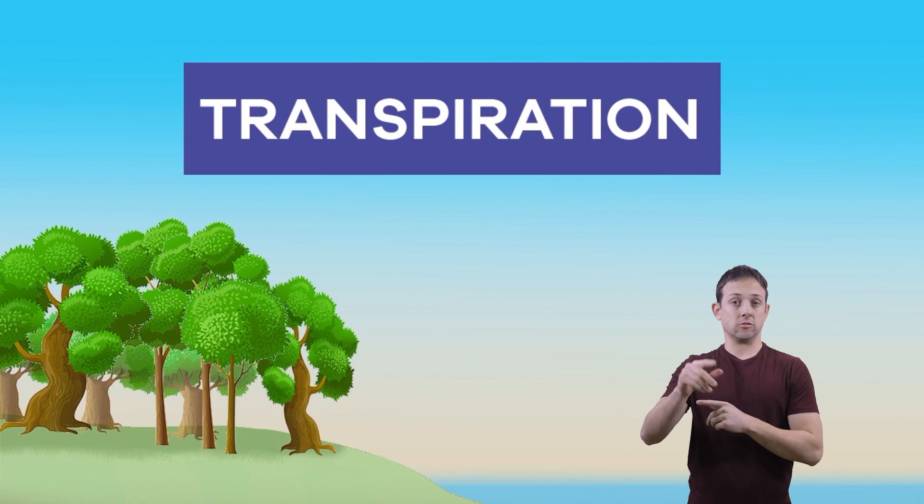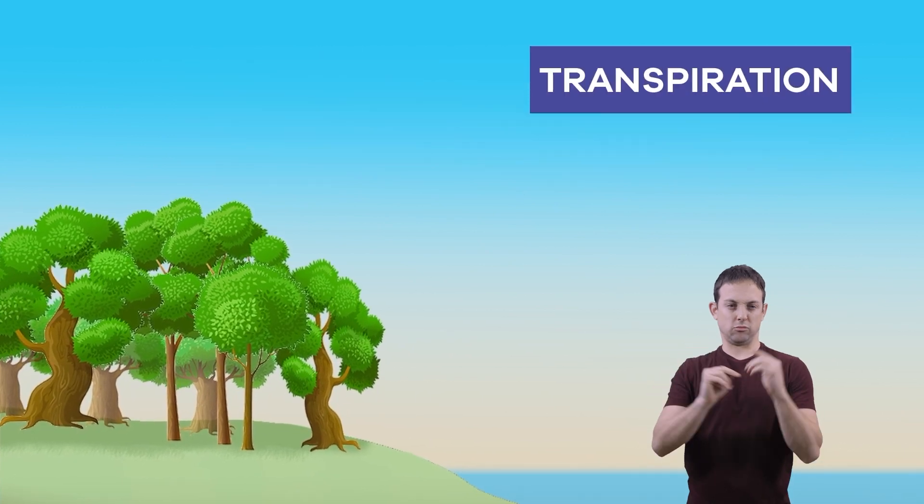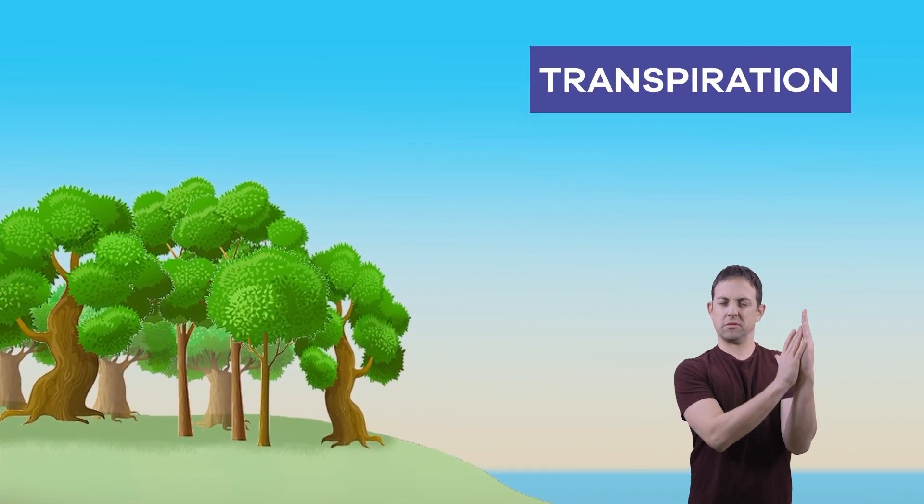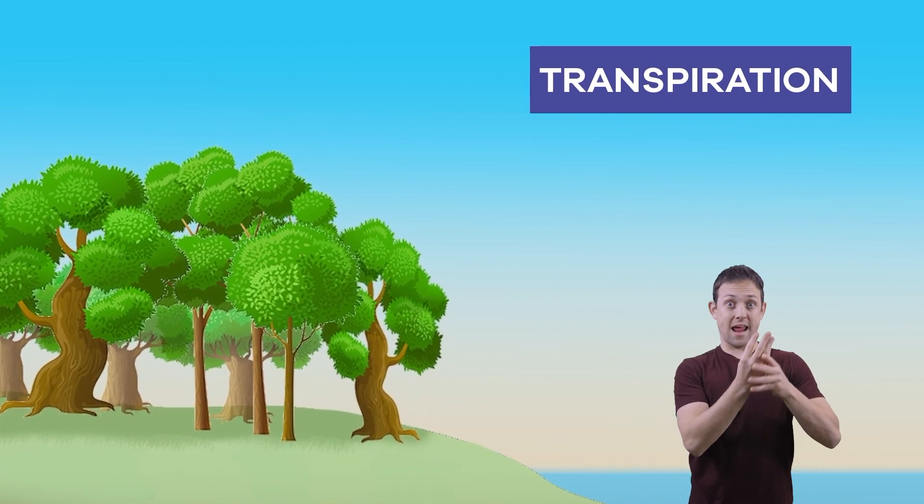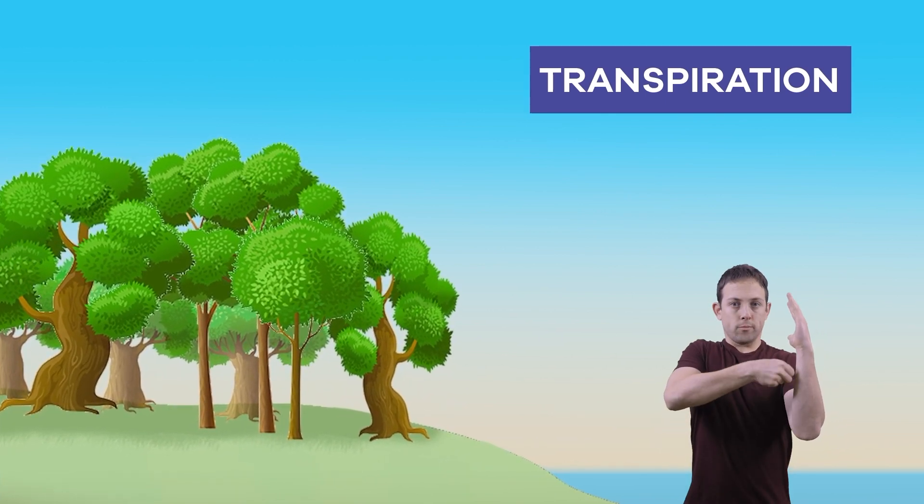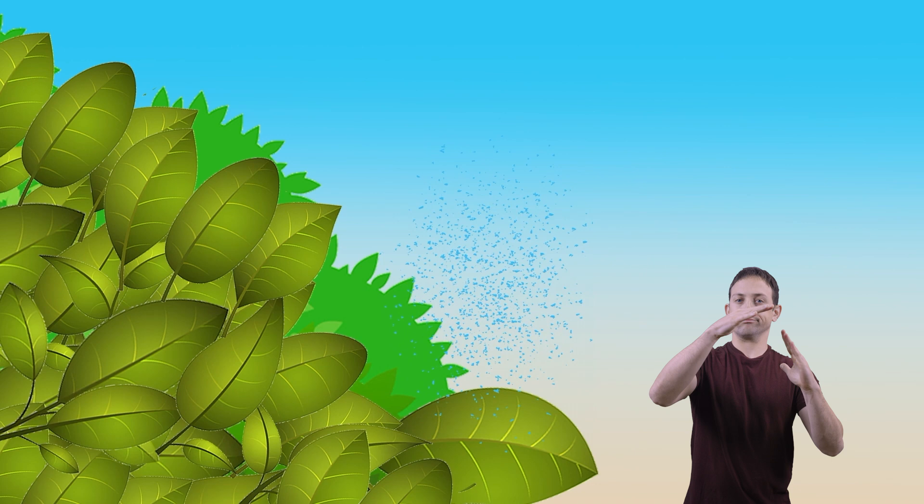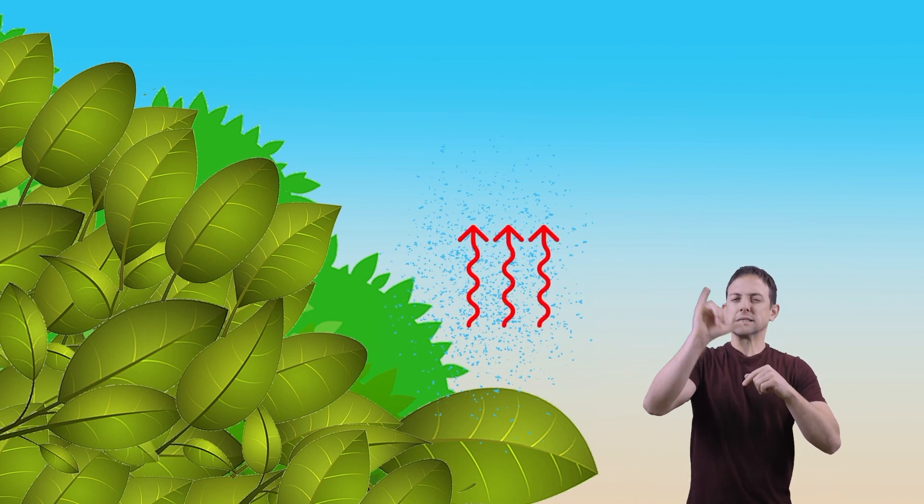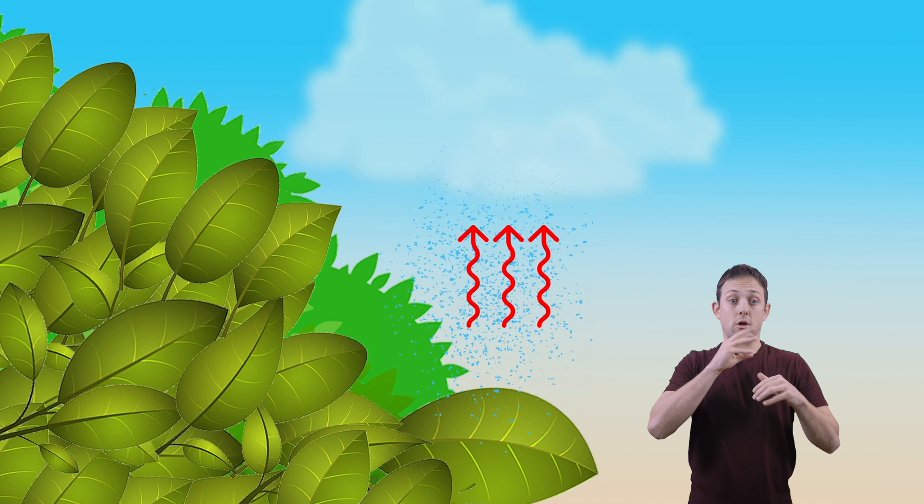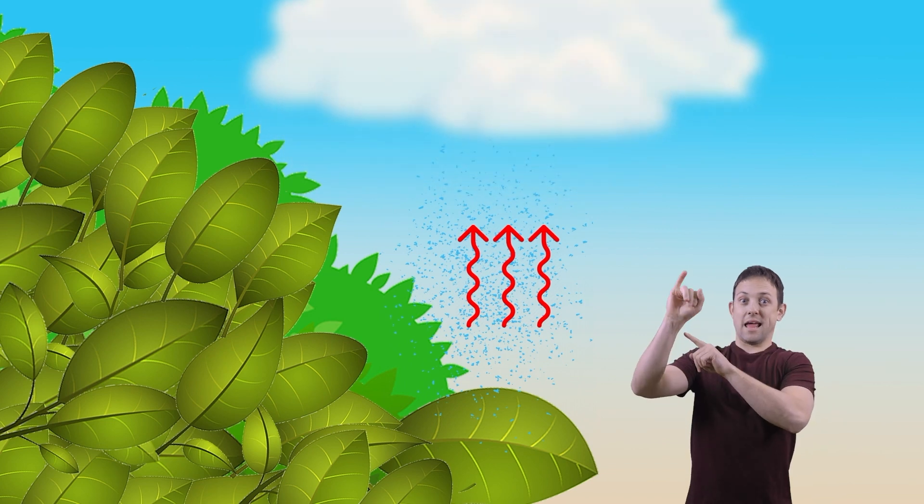Next up, transpiration. Transpiration is the process by which plants lose water in the form of water vapor. Basically, it is the release of water through a plant's leaves, and is similar to evaporation because that water vapor goes into the air.